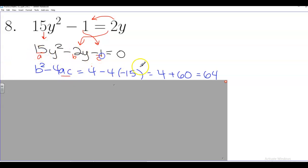And then we have negative 4 times ac. Well, 15 times negative 1 is negative 15. And so this negative 4 times the negative 15 makes a positive 60. And that 60 added to the 4 gives me 64. And then that's a perfect square, because that's the same as 8 squared.